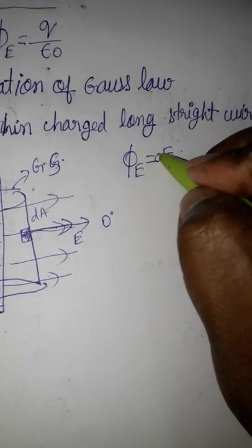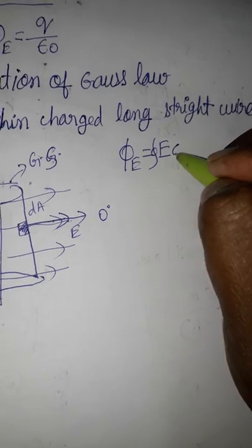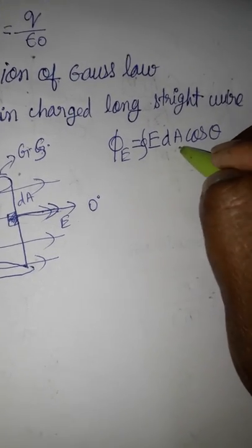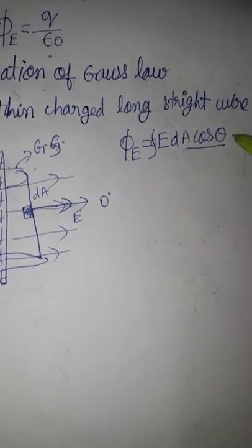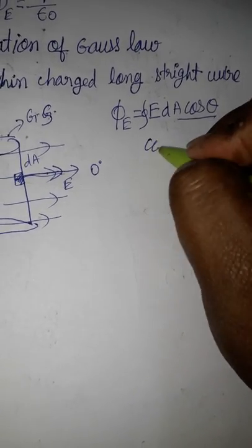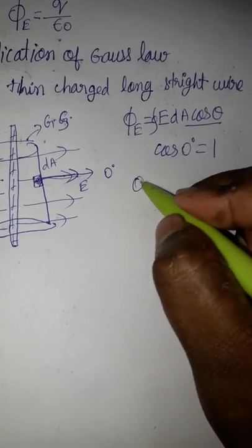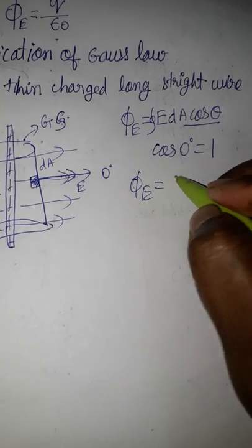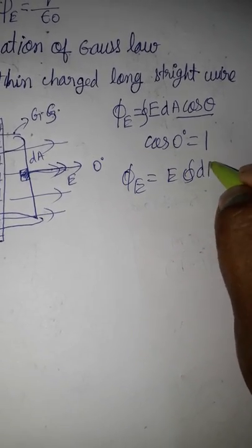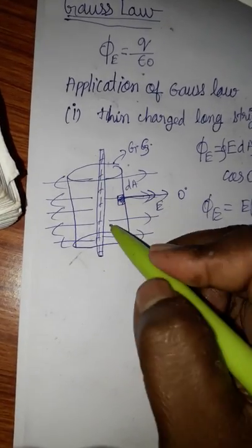The electric flux is equal to the closed surface integral of E · dA with cos θ. Since θ is zero degrees, cos zero equals one. So the electric flux simplifies to E times the closed integral of dA.